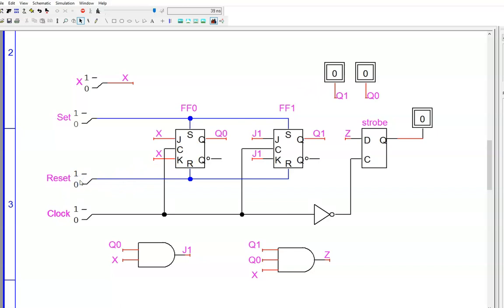I will then flip x to be high. This represents adding a penny to the machine. Nothing changes yet. Why? Because we haven't had a clock cycle.